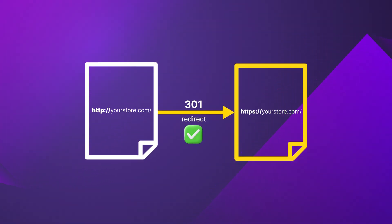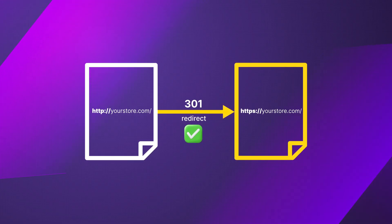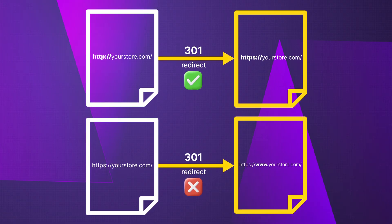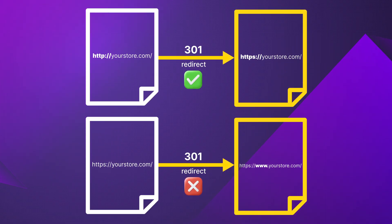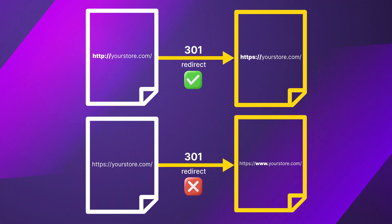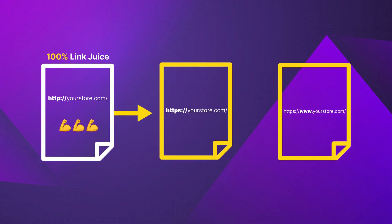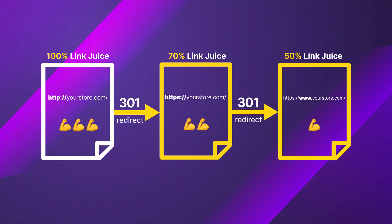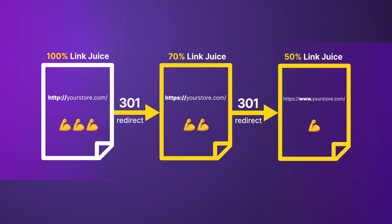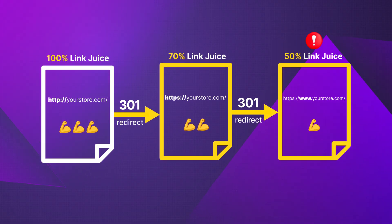If an online store has no redirect setup, you will be able to open all four URL versions and will not be redirected anywhere, which is the worst scenario. More common is that an HTTP to HTTPS redirect exists, but the non-www to www redirect or the www to non-www redirect rule is missing. In most cases both redirect rules exist but are executed one after another, which creates a so-called double redirect on a domain level, and the online store is losing 50% of its external link juice.